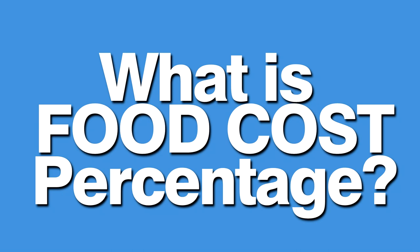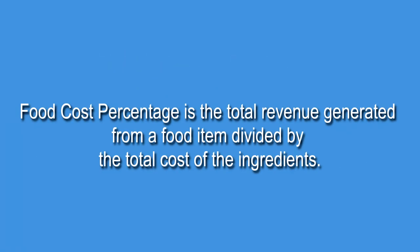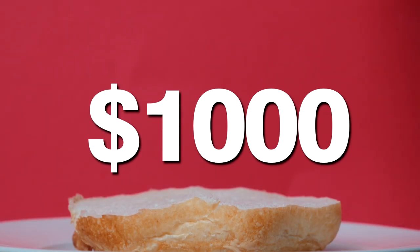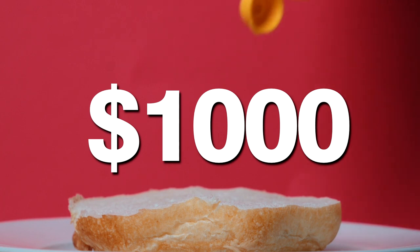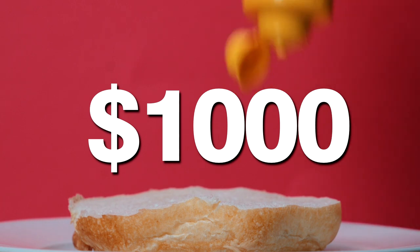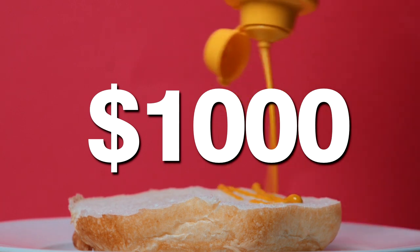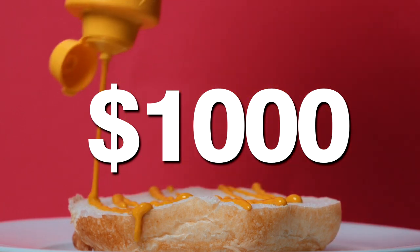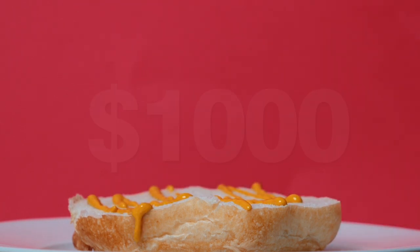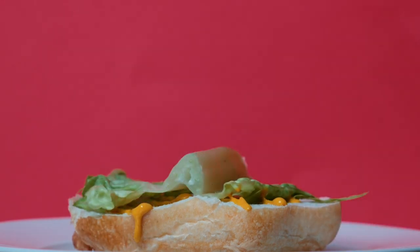What is food cost percentage? Food cost percentage is the total revenue generated from a food item divided by the total cost of the ingredients. Suppose you're selling $1,000 worth of burgers every month, but for making the burger you'll need ingredients like buns, beef, cheese, etc.